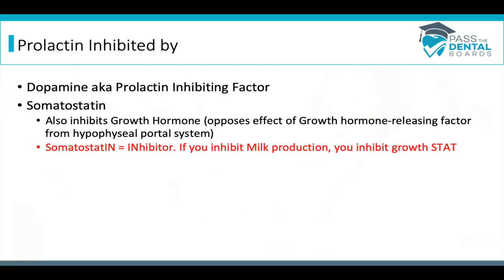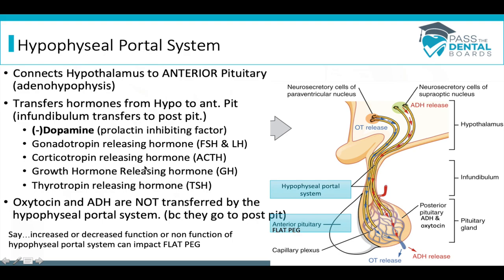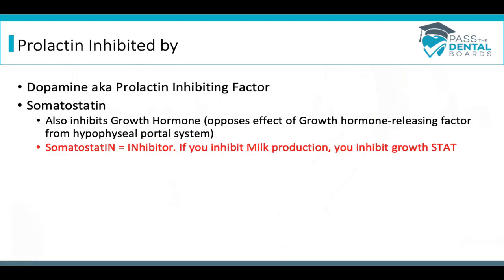Another player that can inhibit prolactin is somatostatin. Somatostatin inhibits a lot of things, but the two main ones tested are growth hormone and prolactin. Because it inhibits growth hormone, it can also oppose the effect of growth hormone releasing hormone. The memory aid: look at the 'in' in somatostatin to remember it's an inhibitor — if you inhibit milk production (prolactin) you'll inhibit growth stat, and 'stat' is a medical term for fast.